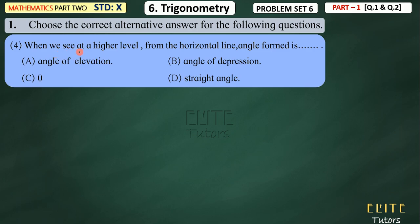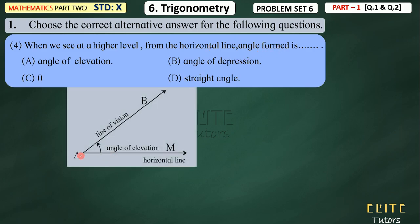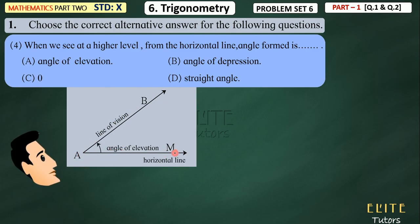When we see at a higher level — if we look at a horizontal line, what is the angle? If there is a straight angle and you are seeing straight ahead, then you call that a horizontal line. If you change your vision and look at the top, there is an angle formed. So when you look up from the horizontal line, you will say that — when you look at the horizontal line and then look upward — the angle you call the angle of elevation. So when we see at a higher level from the horizontal line, the angle formed is the angle of elevation.